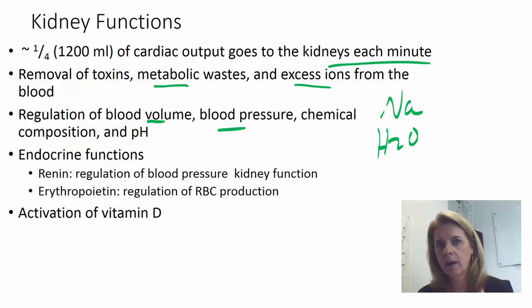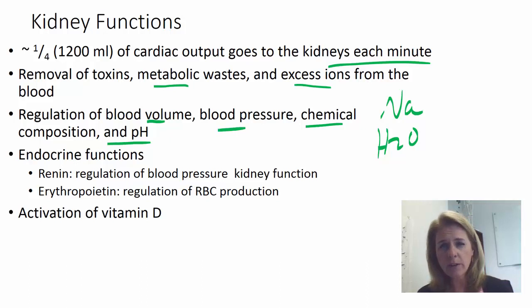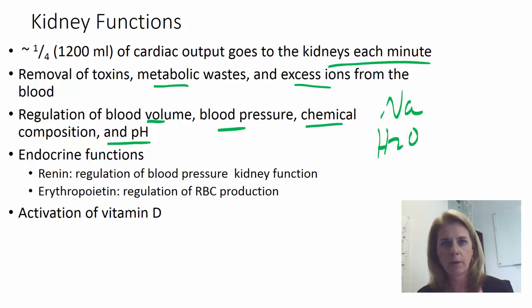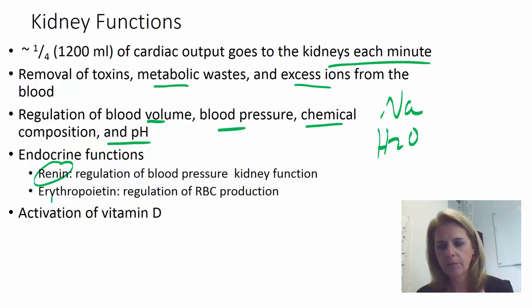The kidneys also help you maintain the chemical composition and the pH of your blood. We're going to talk about acid-base balance in a couple of lectures, and you'll see the role of kidneys there. They also have an endocrine function. We've already talked about renin, which has a role in blood pressure regulation, and erythropoietin, or EPO, which is involved in regulating red blood cell production.